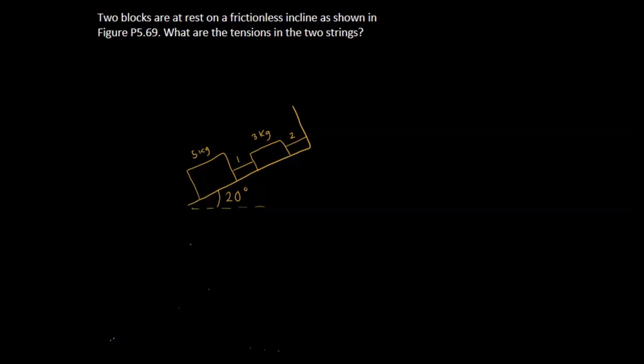It's an incline problem and it states that it's a frictionless incline, so we don't have to really worry about anything in the y direction. The blocks are not accelerating in the y direction, so the acceleration in the y direction is 0. And since they're being held by the ropes or the strings, the acceleration in the x direction is also 0.